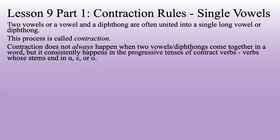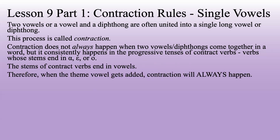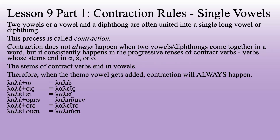In this particular lesson we are particularly concerned with verbs that are called contract verbs — those are verbs whose progressive or first stems end in alpha, epsilon, or rho. Because the stem ends in one of those letters, when a theme vowel gets added we now have two vowels next to each other, and so contraction will always happen in the first stem for these verbs. You don't have to memorize these yet; we'll get to this later in the lesson, in Part 3.